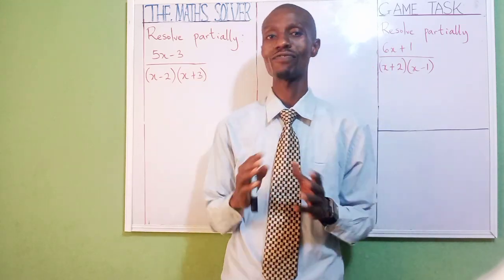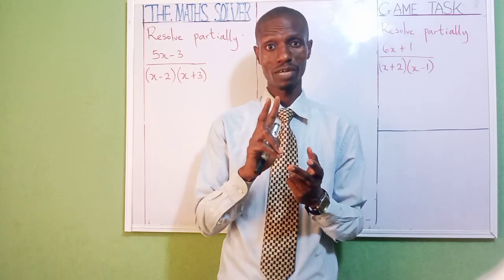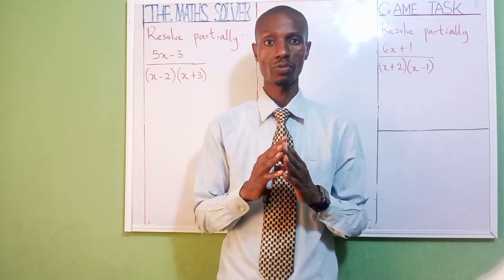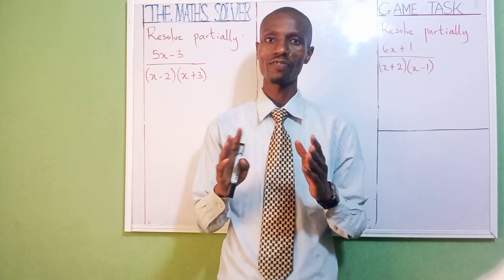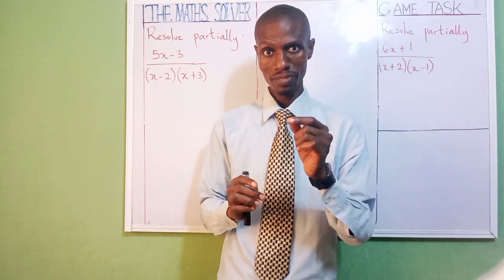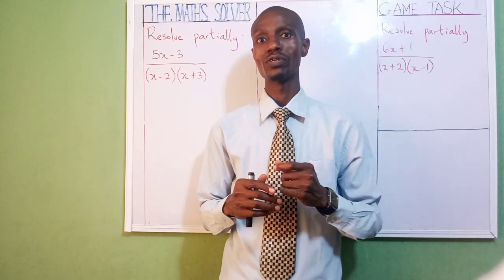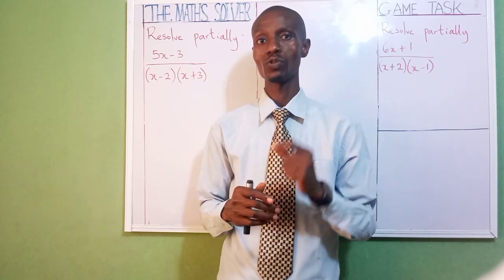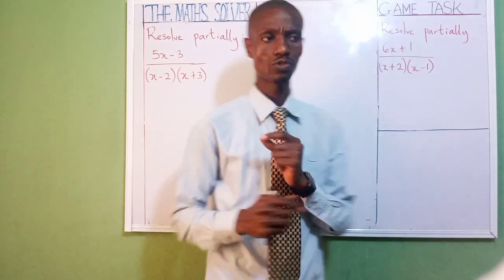Today we are moving on to partial fraction. There are two things I wanted to note under partial fraction. It's one of the simplest topics in mathematics, but there are two methods of solving partial fraction. We have the cover-up method and the initial method. For the initial method, that's what we want to do now. Along the line, we move on to the cover-up method, but not in this class — in a subsequent video. Let's now move on to the initial method.